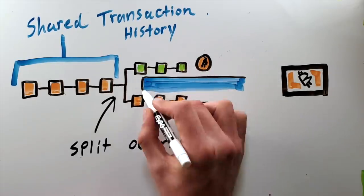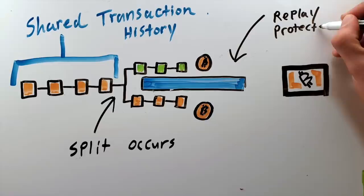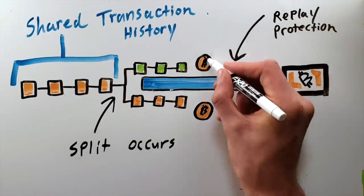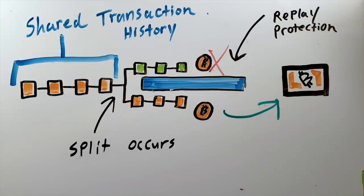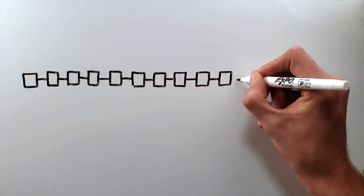This is of course problematic if both chains continue to exist, so generally replay protection is added. Replay protection is when one of the chains changes their transaction format to be incompatible with the other. This makes the split cleaner, as no transactions can be replayed, it's a clean break. There is a common misunderstanding that replay protection itself causes a split, but this is not the case. Miners cause the split.